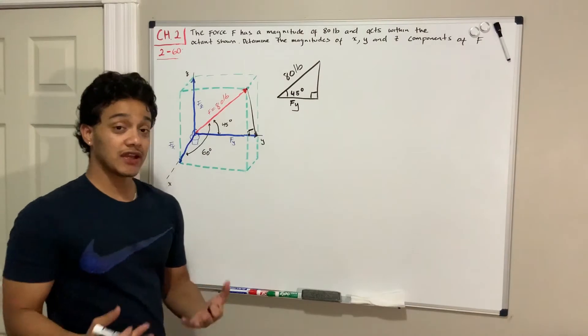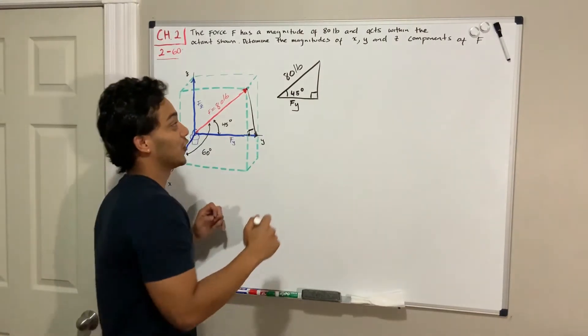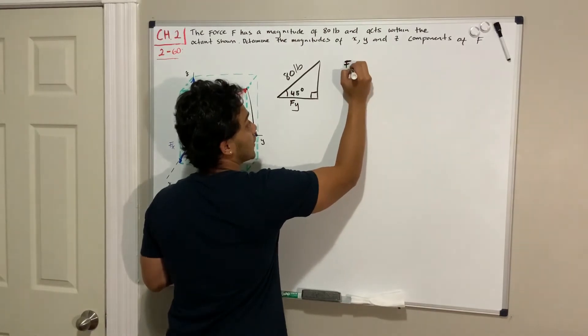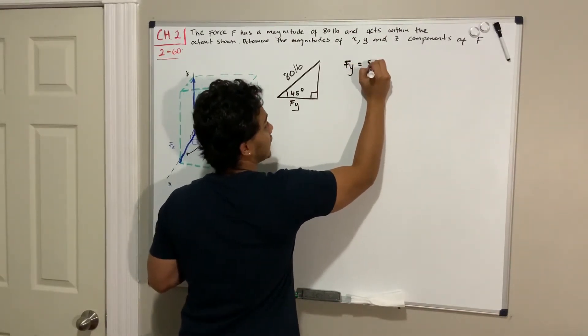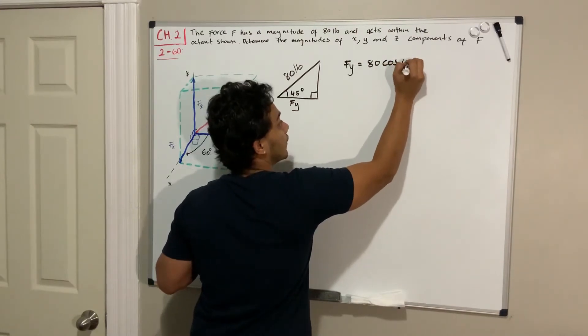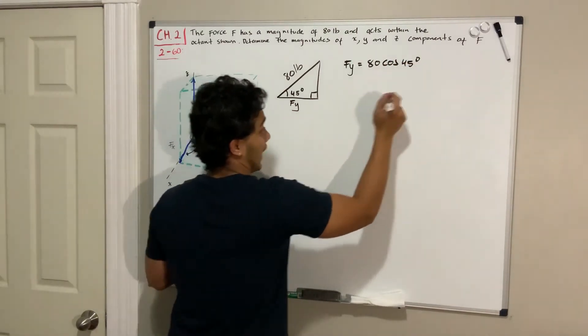So knowing this, we can apply our basic trigonometry and solve for F of Y. F of Y is basically going to be the hypotenuse multiplied by the cosine of the angle. I'm using cosine because it's adjacent.